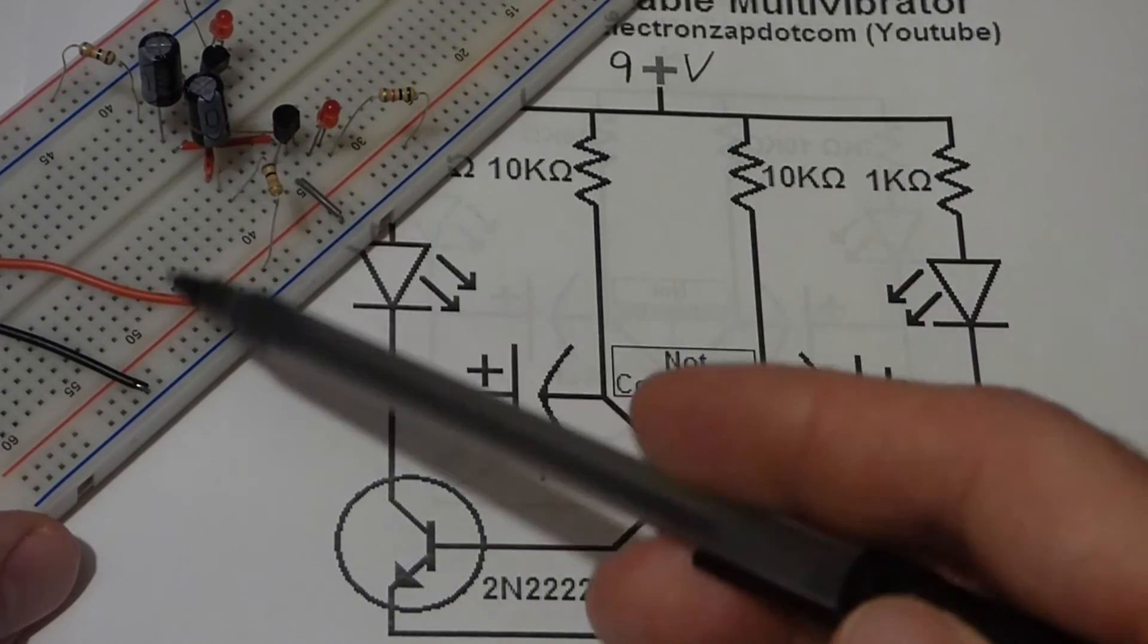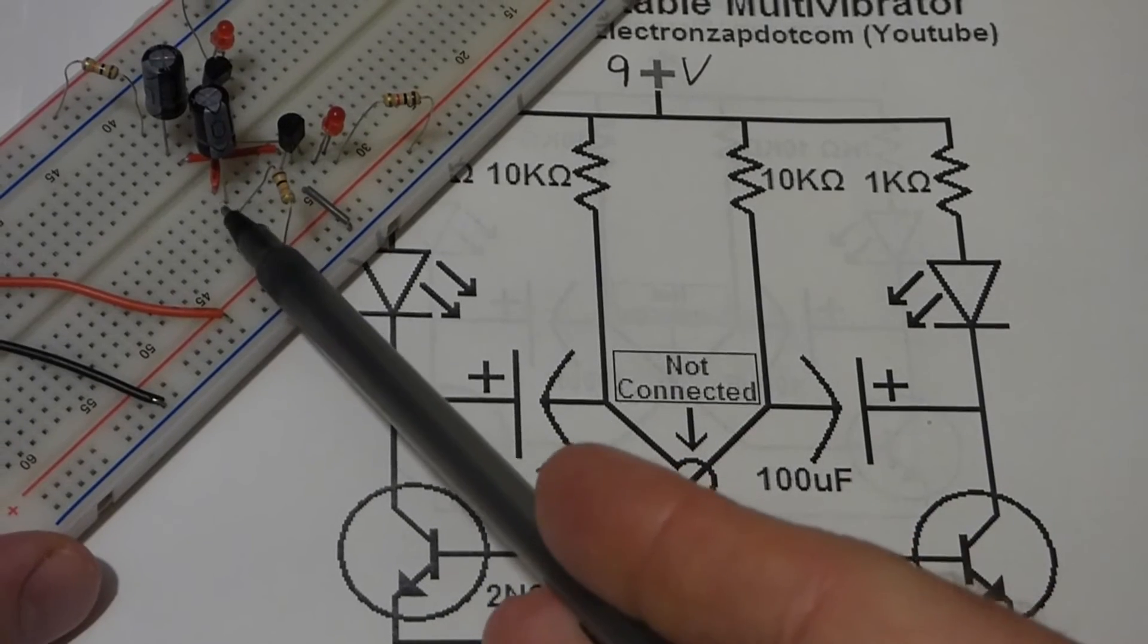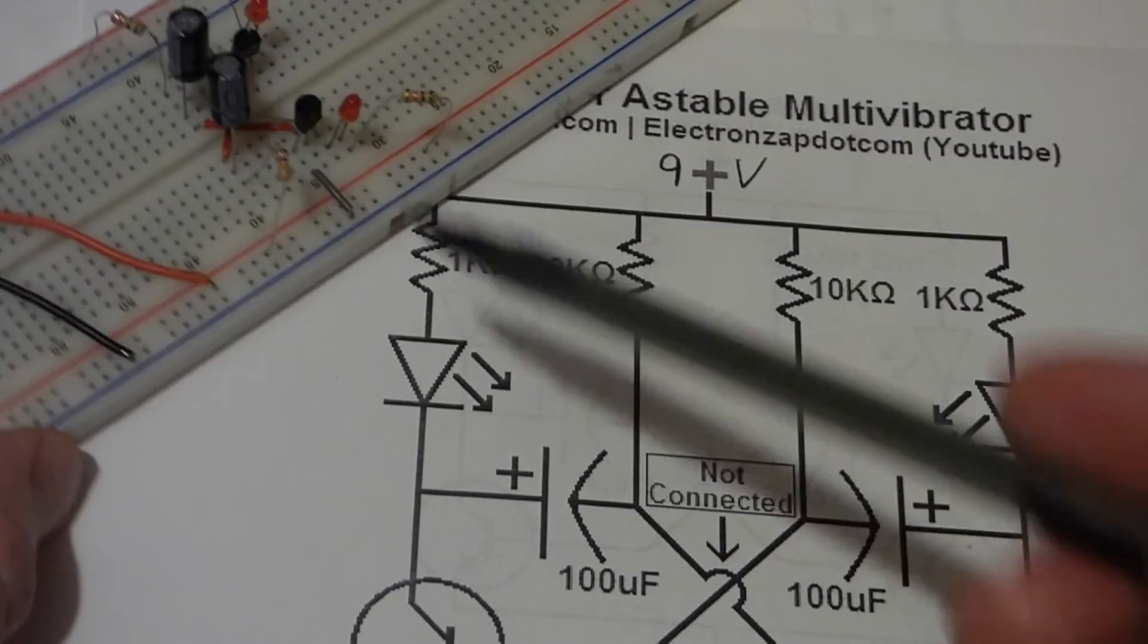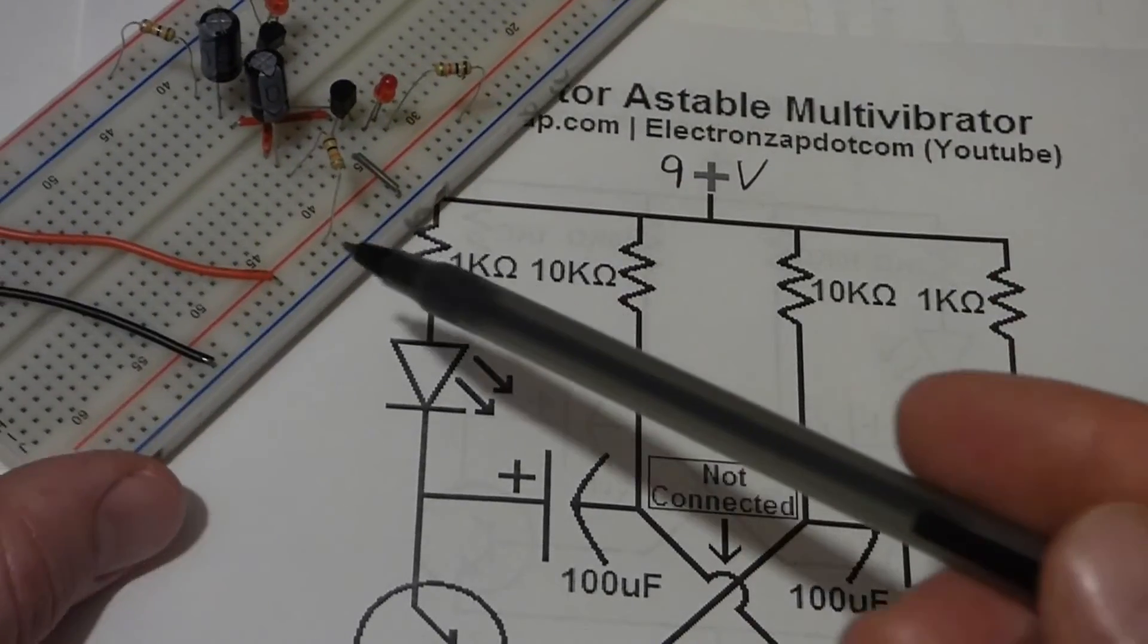So, as I said down here, here's the negative side of the capacitor. And then, next to it's a jumper that brings it to the base of the other transistor over there.